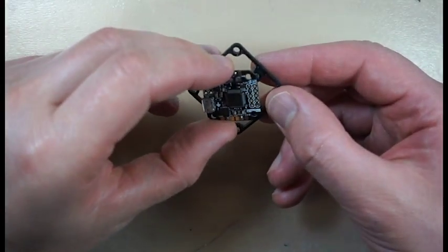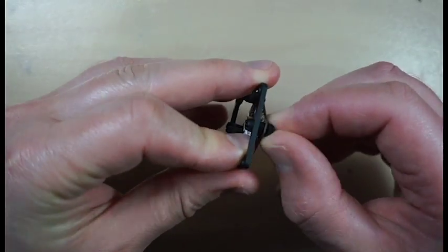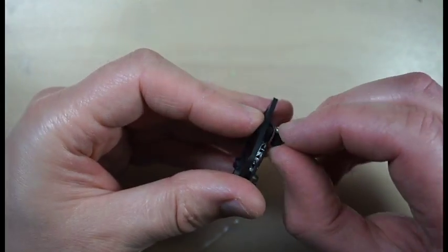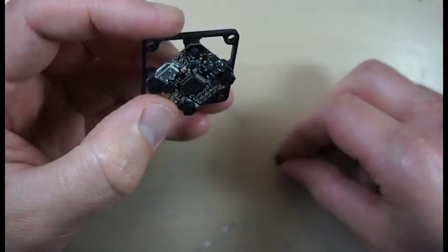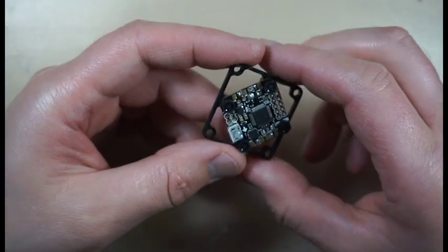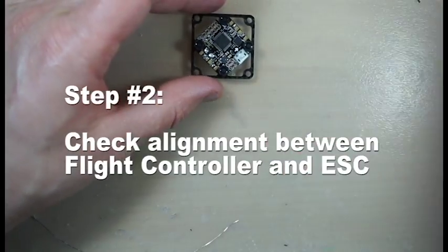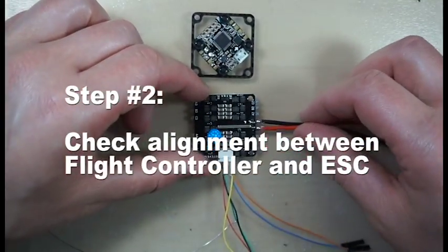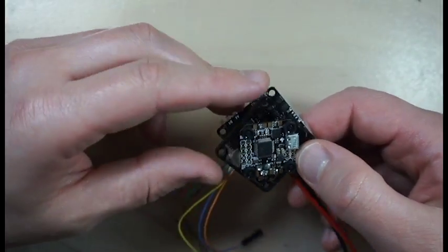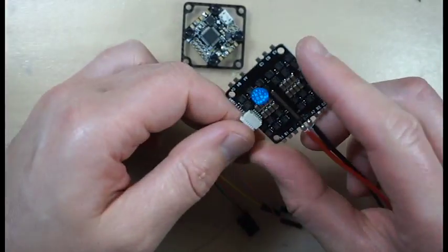Double check that flight controller fits well and install screws to secure it in place. This is approximately the result we want to get. We want to have USB on the right side and speed controller connector on the left side.